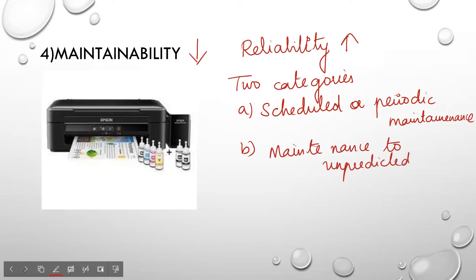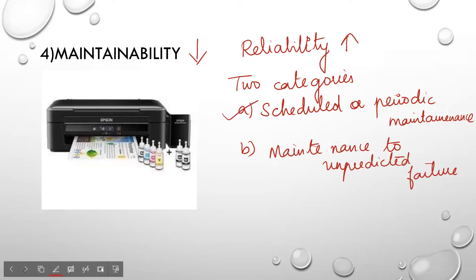Now let us take the example of an inkjet printer. In your inkjet printer, you have to change the ink cartridge after a certain number of printouts are taken — for example, after a thousand printouts, you have to change the inkjet. So this is called scheduled or periodic maintenance.